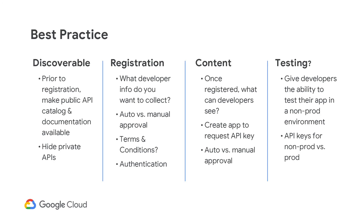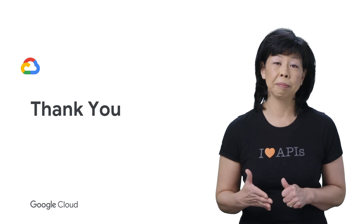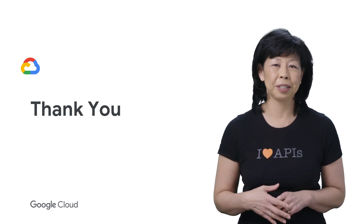Here are a few best practice tips: make your API catalog discoverable, make registration on your developer portal frictionless, ensure that your content is engaging and up-to-date, and give your developers the ability to test their application — this will ensure quality rollout for everyone. I hope you found the topic of developer engagement engaging. Be sure to check out the next video on adoption strategies.